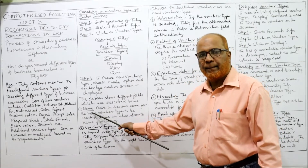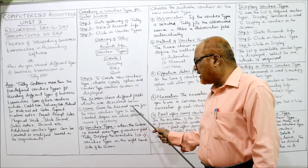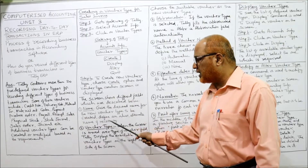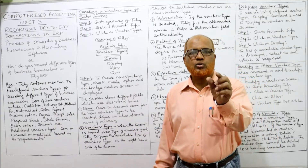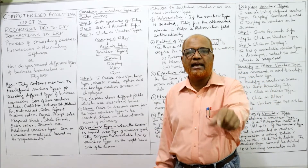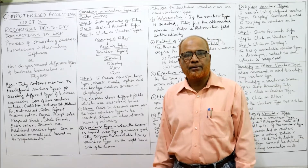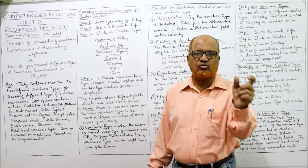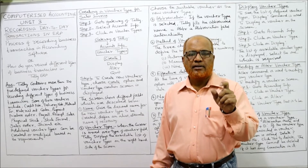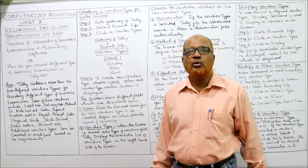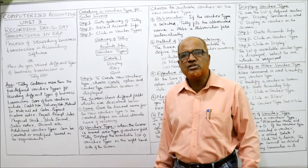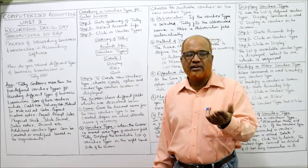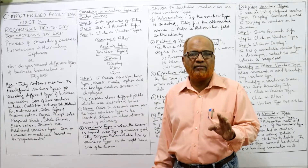The first field on the Voucher Type Creation screen is Name. Give the desired name for the new voucher type. You can also define an alias — an alternate name — if necessary. After giving the name, select a suitable name for the voucher type. The alias is optional; you can fill it in or leave it blank.